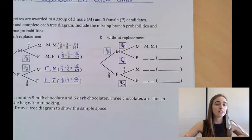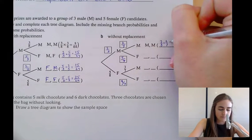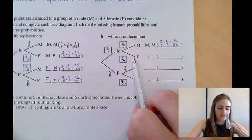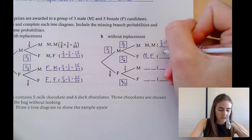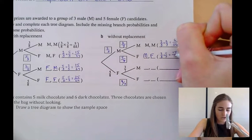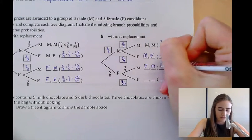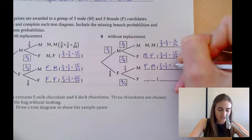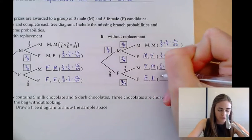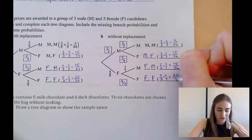Calculating the probability of each outcome without replacement: male-male = 3/8 × 2/7 = 6/56. Male-female = 3/8 × 5/7 = 15/56. Female-male = 5/8 × 3/7 = 15/56. Female-female = 5/8 × 4/7 = 20/56.